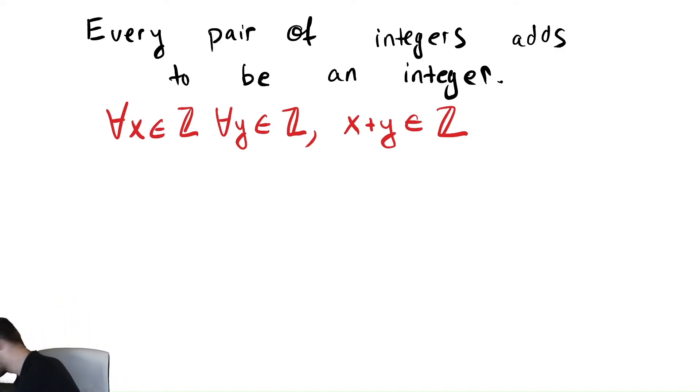So our next statement is every rational number is the quotient of two integers.